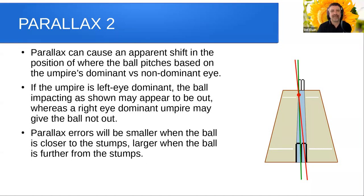Parallax errors will be smaller when the ball is closer to the stumps, larger when the ball is further from the stumps and of course closer to you, the umpire.